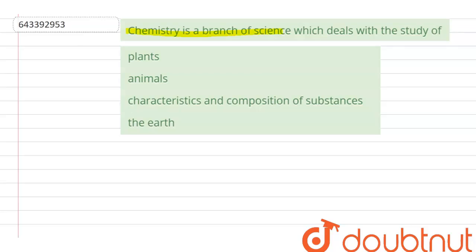is a branch of science which deals with the study of... and the options are: plants, animals, characteristics and composition of substances, the earth. So we have to tell which branch of science chemistry is dealing with the study of.